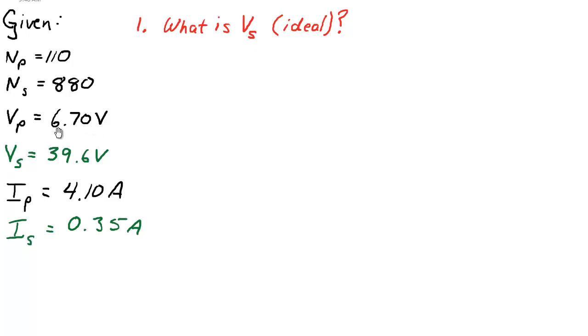The primary voltage is stated to be 6.70 volts as measured by the voltmeter. And the secondary voltage, when measured experimentally, steps up to 39.6 volts. I've written this one in green simply because that's an experimental value. And we're going to try and figure out what it should be ideally if there was no losses.